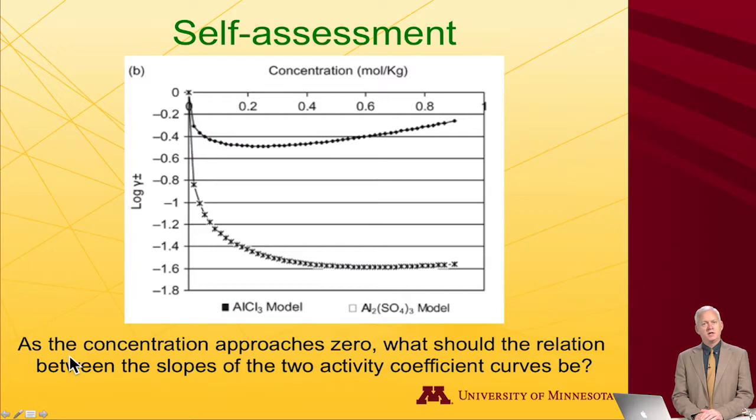And indeed, it's a good point to think about this in a little more detail. The self-assessment is, as the concentration approaches zero, as we're coming in on these asymptotes, what should the relation between the slopes of the two activity coefficient curves be? And I'll just offer a hint that probably Debye-Huckel theory is going to be your friend here.